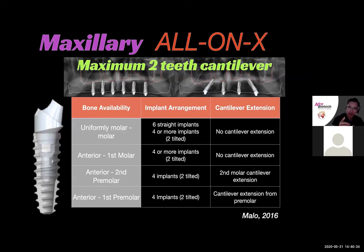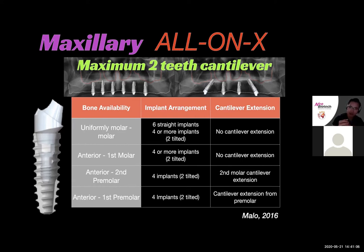I do not recommend a cantilever extension longer than two teeth, because anything longer than that significantly increases the risk of posterior implant failure. With angled implants, you need to use angled transmucosal abutments — also known as angled multi-unit abutments — to help align the path of insertion of the posterior implant with your anterior implants. Occasionally you might need an angled multi-unit abutment on the anterior implant if you're trying to get the access hole lingual to the incisal edge, or in cases where you need to correct severe buccal inclination of the anterior maxilla. For the maxilla, our sweet spot is placing four to six implants without additional bone or sinus augmentations, making treatment more affordable for patients.